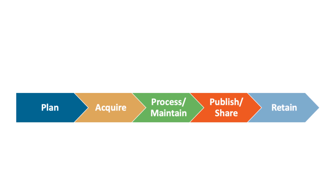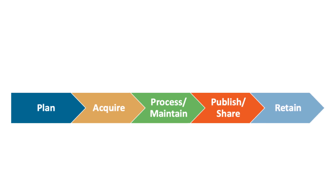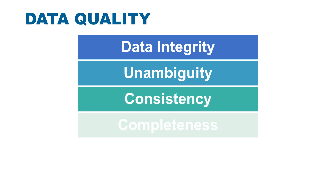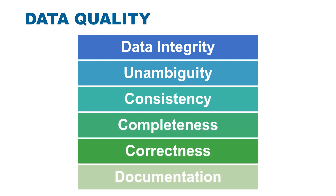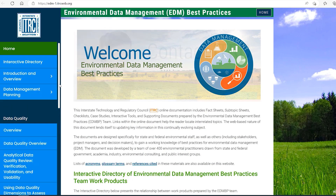The data lifecycle is shown here, moving from planning to data acquisition to maintenance and then on to publishing or sharing and retaining. Environmental data is frequently used to make consequential decisions. Knowing the quality of your data is crucial for having confidence in those decisions. Data quality needs to be considered at every stage in the data lifecycle.